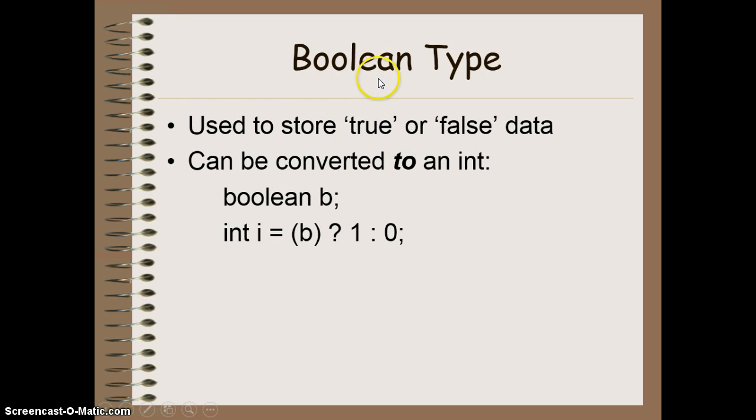So the Boolean data type, as you remember, stores true or false data. And we can convert this to the other types as well. You can convert it to an integer. Remember, integer would be 1 versus 0, 1 being true, 0 being false. You do that using this code here.